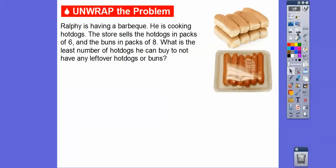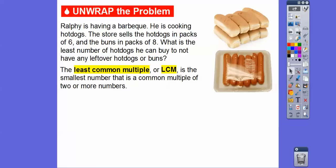Here's a problem. Ralphie is having a barbecue and cooking hot dogs. The store sells hot dog packs in packages of six and buns in packages of eight. What is the least number of hot dogs he can buy to not have any leftover hot dogs or buns? If he bought six hot dogs and eight buns, he'd have two buns left over. So we're looking at a least common multiple.